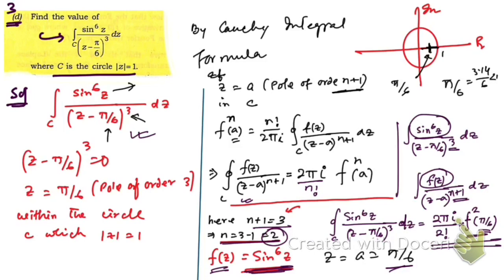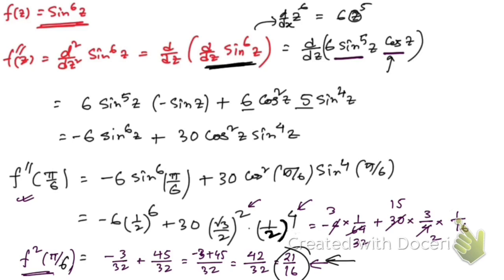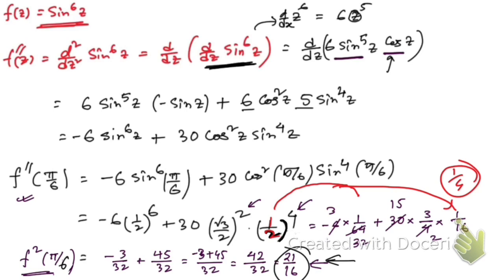Let's start with 3d. I had already solved this in Part 2 but later cut that part because I made a mistake. Here you can see the correction: I had put 1 by 2 to the power 4, which should be 1 by 16, but I had put 1 by 4 — that was the mistake.